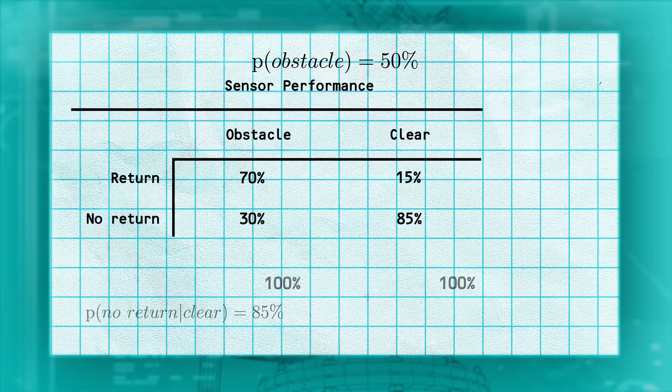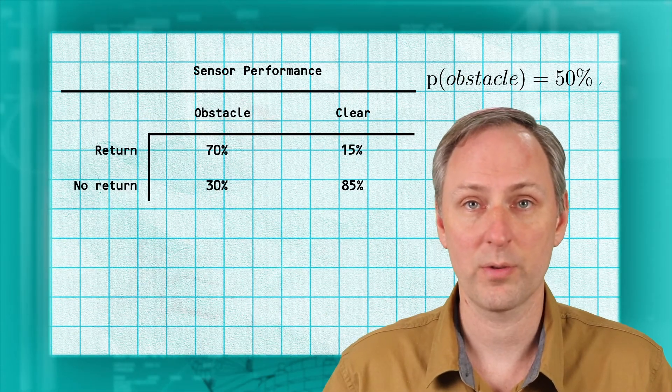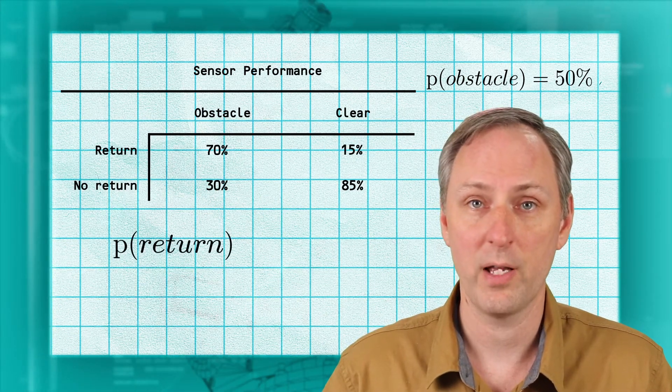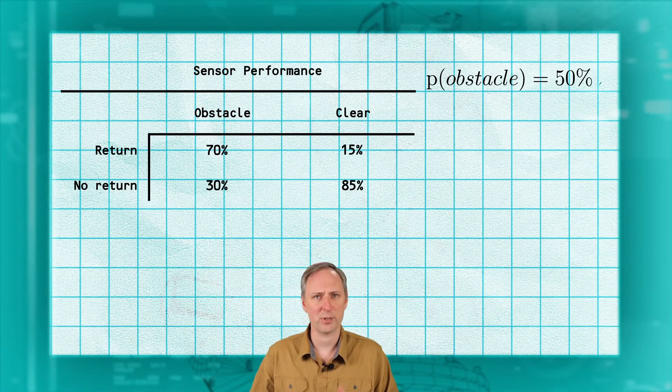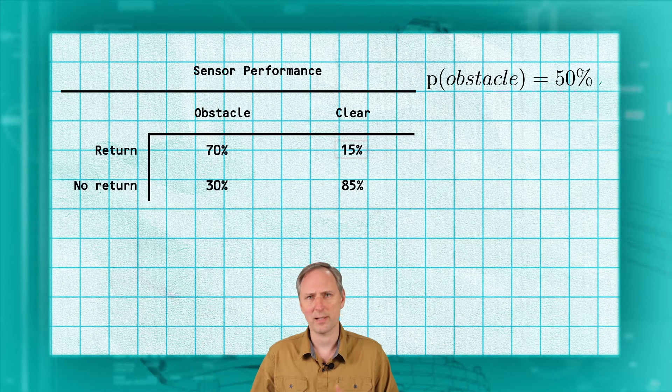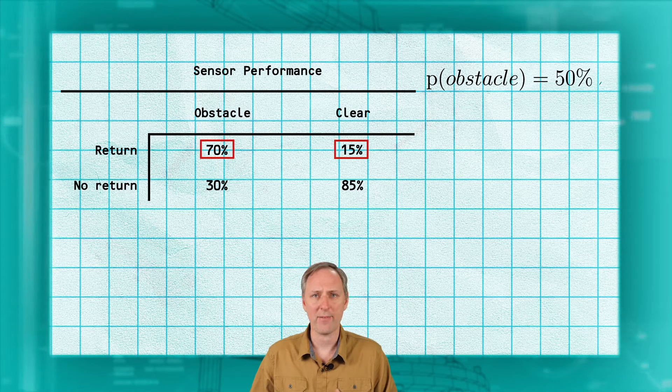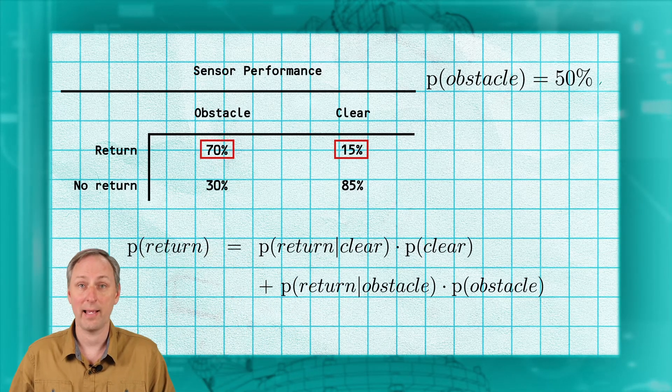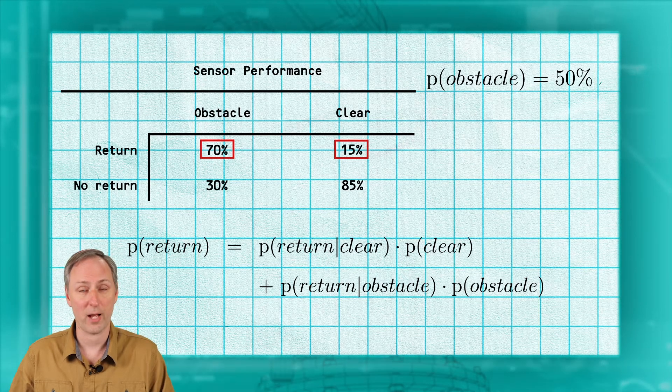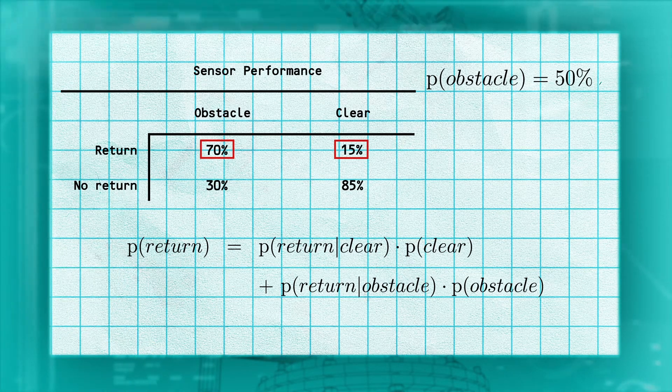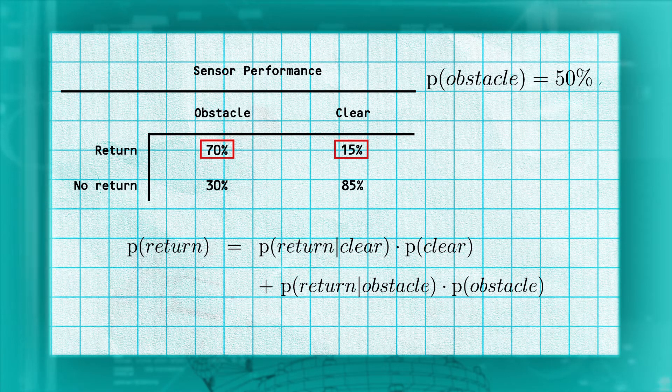Now we will use these probabilities to calculate two other terms, the total probability of a return and the total probability of no return. Since we know there are only two options for our cells, they can either be clear or they can contain an obstacle, we know that if we have the probability of a return given a clear cell and the probability of a return given an obstacle cell, those account for all the ways we can get a return. The total probability can be calculated by taking the sum weighted by the probability of each case.